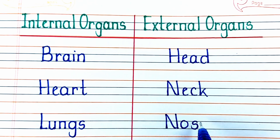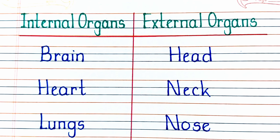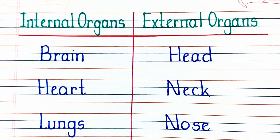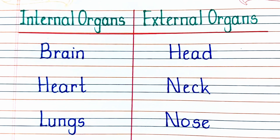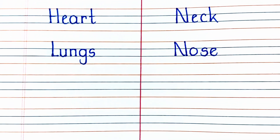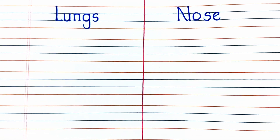The next internal organ in our list is the heart. Without the heart we cannot survive. The next external organ in our list is the neck.